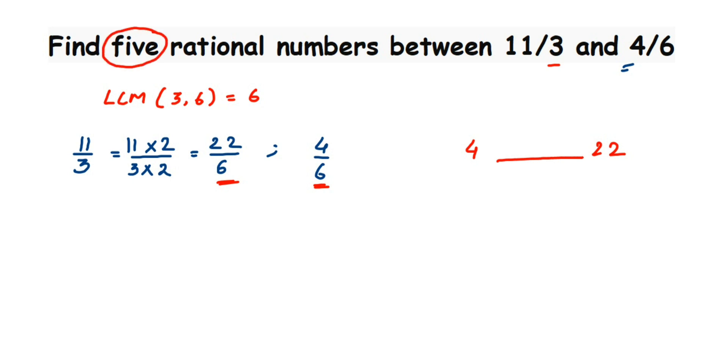Between 4 and 22 we have many numbers starting from 5, 6, and so on up to 21. From between these numbers we can pick any 5 numbers and we can write down as rational numbers.